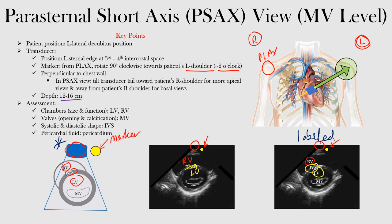You can also see the mitral valve here within the left ventricle. The chambers to look at for size and function are the left ventricle and the right ventricle. We can also look at the systolic and diastolic shape of the interventricular septum. Additionally, you can assess for pericardial fluid or effusion by looking at the pericardium — the white area along the back lower portion of the image.